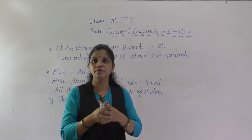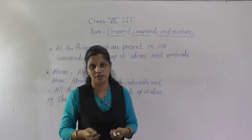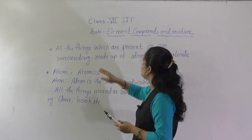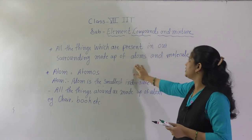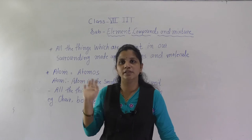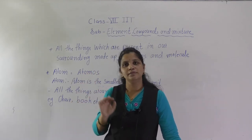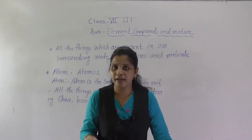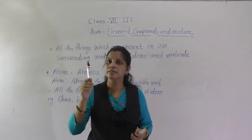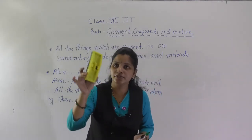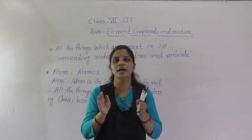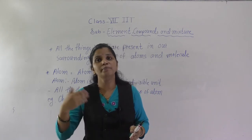Before starting elements and compounds, we have to see some basic points. First, we will see what is an atom. All things present in our surroundings are made up of atoms and molecules. Whatever things are present in our surroundings are known as matter. Anything that has mass and occupies space — for example, this pane, this duster, this board — all are matter.